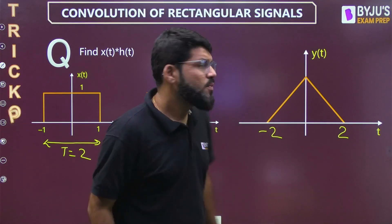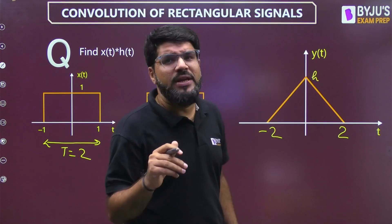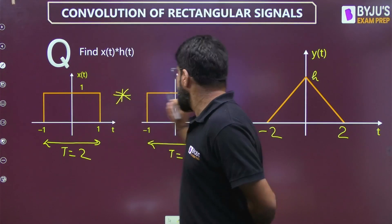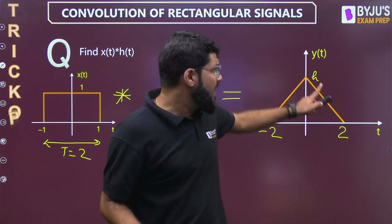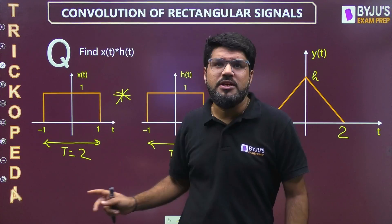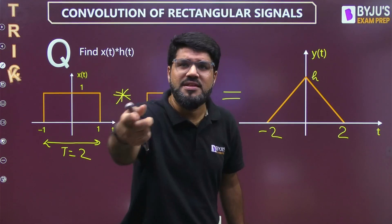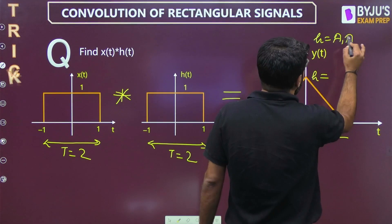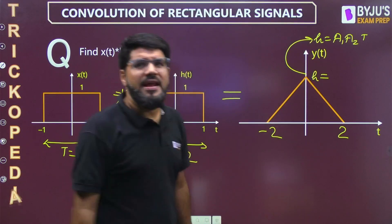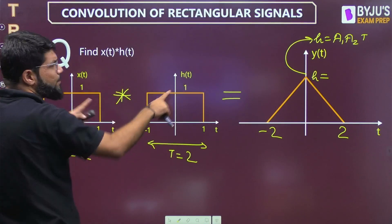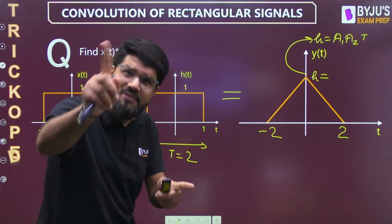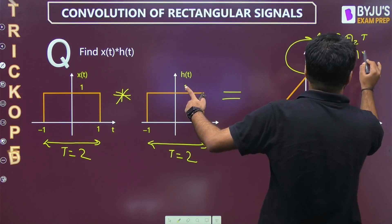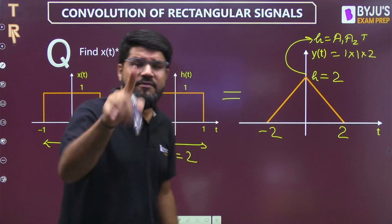Now, what about the height? The trick is that when two signals are convolved, their areas multiply. The direct result from the area method gives the height as A1 times A2 times T, where A1 and A2 are the amplitudes and T is the duration (width). Here both amplitudes are 1 and the width is 2, so the height equals 1 × 1 × 2 = 2.